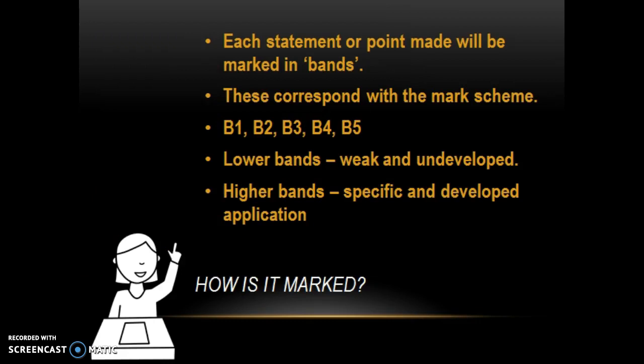Each statement or point made will be marked in bands, and these bands correspond with the mark scheme starting at the bottom with Band 1 going up to Band 5, with increasing application. Lower bands tend to be weak and undeveloped — disjointed, short sentences, very undeveloped — whereas higher bands, Band 5, tend to be a chunky paragraph. It's very specific and has developed application.